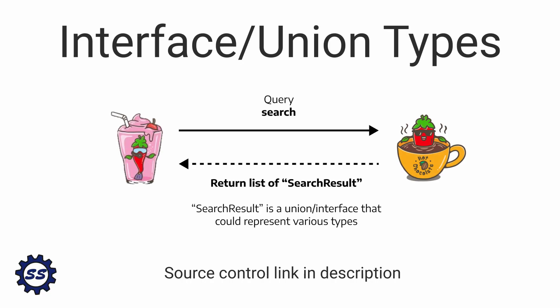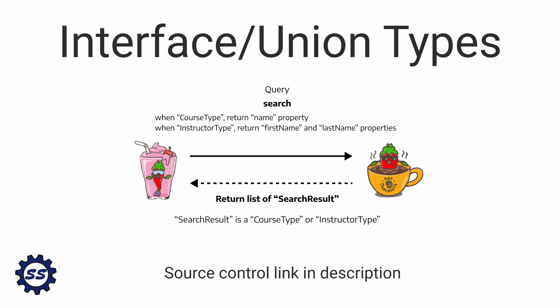A GraphQL server may return interface or union types, which is an abstract GraphQL type that allows the server to return various different subtypes in one resolver. In our GraphQL client application, I want to hit a query that returns a union or interface type and demonstrate how we can use fragments to get data about each of the subtypes.